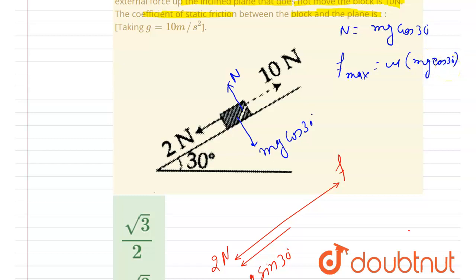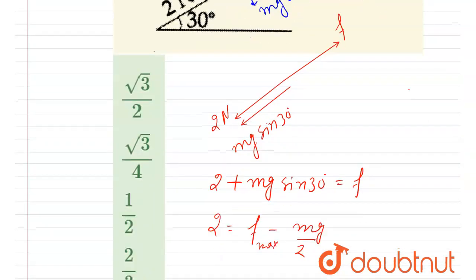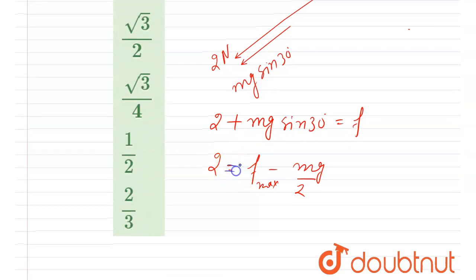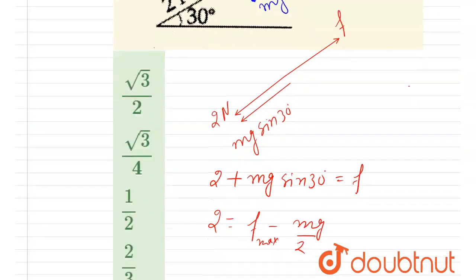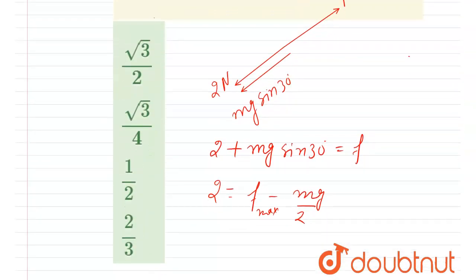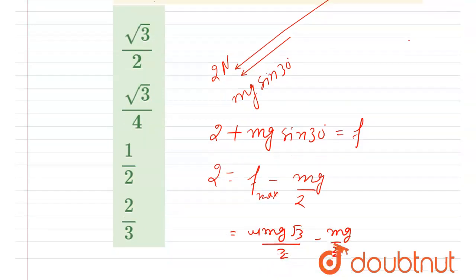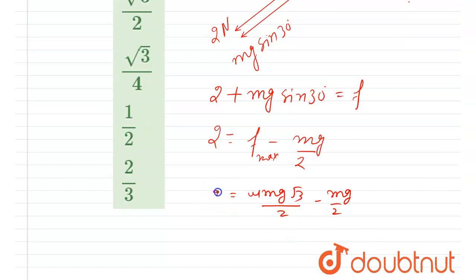This will be the maximum friction force, acting in the case when 2 newton — the maximum force — is applied down the plane. So putting in the value: maximum friction force = μmg cos 30° = μmg·(√3/2). Therefore: μmg·(√3/2) − mg/2 = 2. This is equation 1.